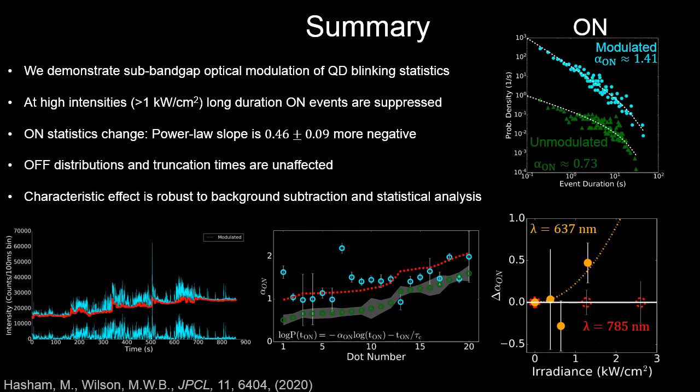Just to wrap up, I hope I've shown you that we can take advantage of the characteristic intermittency and dynamically subtract that background, isolate the effects of subband gap modulation, and hopefully we have a new handle here on examining the mechanism behind blinking. As a result, I think even just qualitatively we can see that long duration on events are suppressed, the changes look to be scale-free, selective to the on state, and hopefully robust to our methods of statistical analysis.